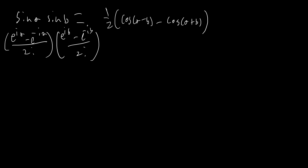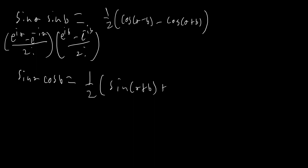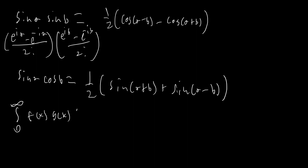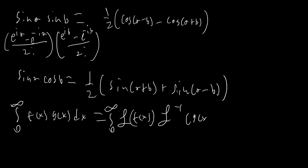The other identity we need is sine a times cosine b, which by the same approach equals one half times sine(a plus b) plus sine(a minus b). The last one we need is the Parseval-type mass identity, which says the integral from zero to infinity of f(x)·g(x) dx equals the integral from zero to infinity of the Laplace transform of f(x) times the inverse Laplace transform of g(x). It's super easy to prove — I won't do it here, but you can check out my other video linked in a card.